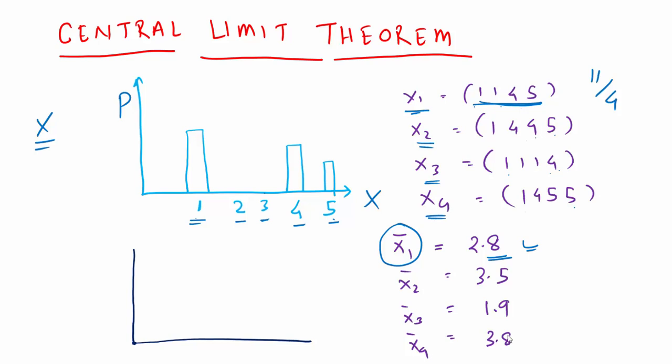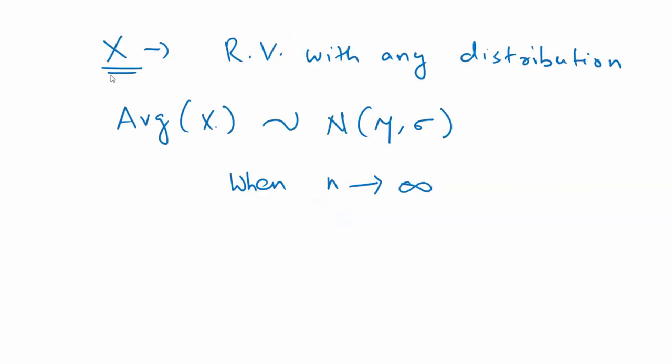Now, the Central Limit Theorem says that no matter what the distribution of the random variable is, if you plot the distribution of its average over a large number of times, then it will tend to be normal. If x is a random variable with any distribution, it doesn't matter what its distribution is, its average will be normally distributed when you keep experimenting n number of times. When n tends to infinity, the distribution will tend to normal.